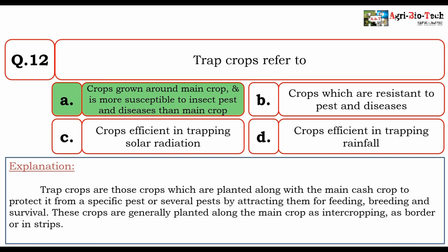Trap crops are those crops planted along with the main cash crop to protect it from specific pests by attracting them for feeding, breeding, and survival. These crops are generally planted along with the main crops as intercropping, as border crops, or in strips. So the correct answer is A. Crops grown around the main crop that are more susceptible to insect pests and diseases than the main crop.